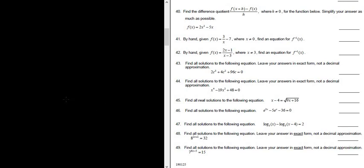Let's work out problem number 49. Find all solutions to the following equation. The equation is 7 to the 6x minus 5, and that's equal to 15.